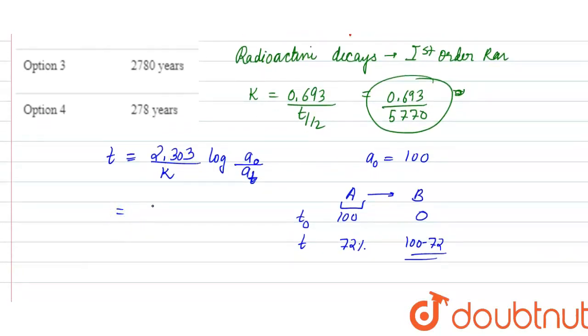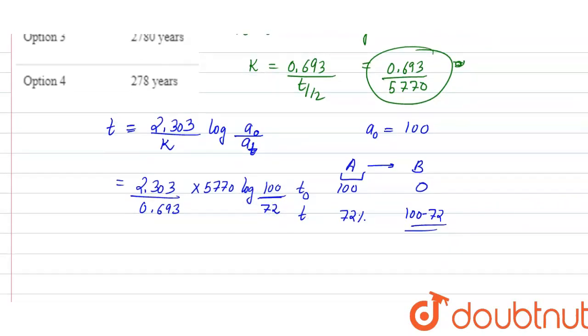So if I put my values here, it will be 2.303 upon rate constant which is 0.693 into 5770, log of initial which is 100 upon at time T which is 72. So when I solve this here, when I have solved this whole term...